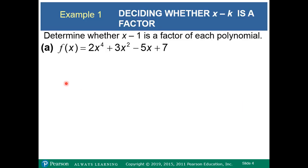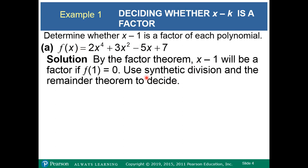So the Factor Theorem basically says that for any polynomial f of x, x minus k is a factor if and only if f of k is equal to 0. This is an if and only if, so it goes both ways: if f of k is 0, then x minus k is a factor; and if x minus k is a factor, then f of k must equal 0. Now in this example, determine whether x minus 1 is a factor of each polynomial — we're going to use synthetic division.